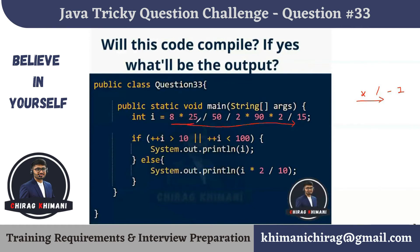First we do 8 × 25 = 200. Then 200 ÷ 50 = 4. Then 4 ÷ 2 = 2. Then 2 × 90 = 180. Then 180 × 2 = 360. And 360 ÷ 15 = 24. So the value of i will be 24.